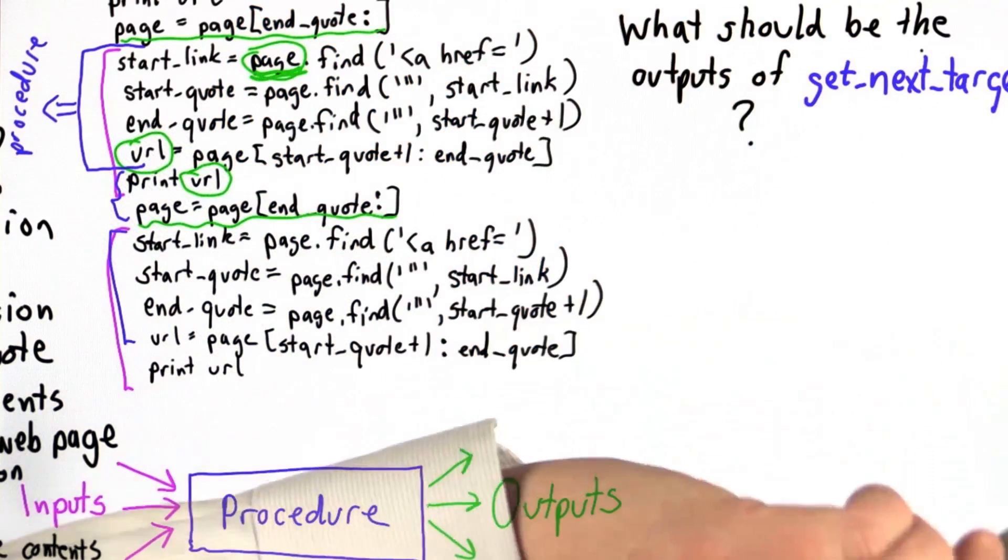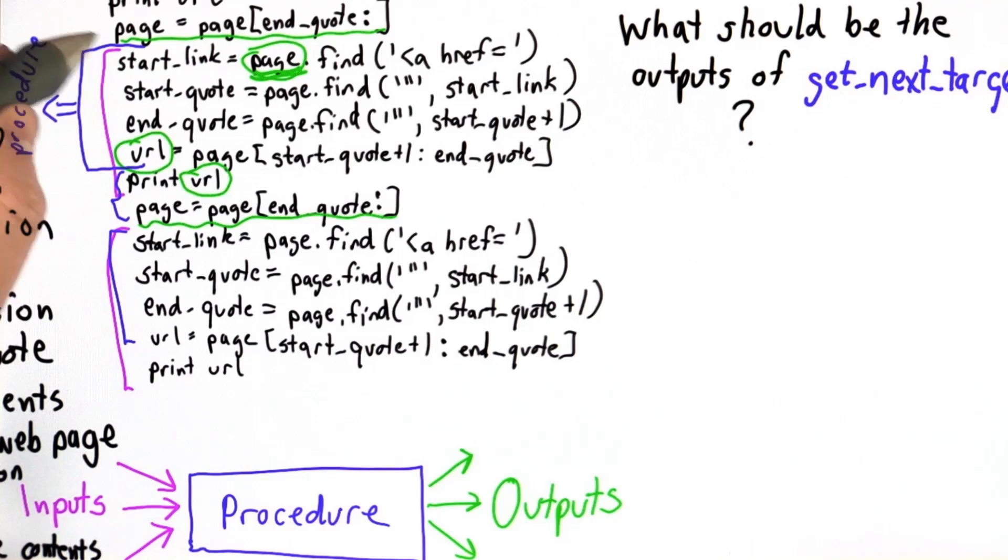So the question is, what should be the outputs of getNextTarget, the procedure that we're going to define to replace this code?